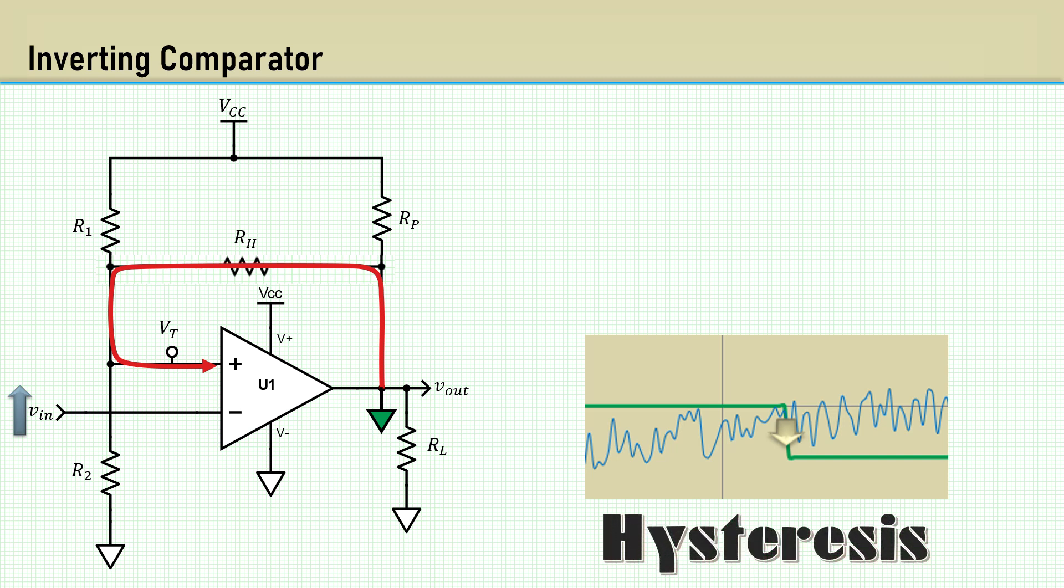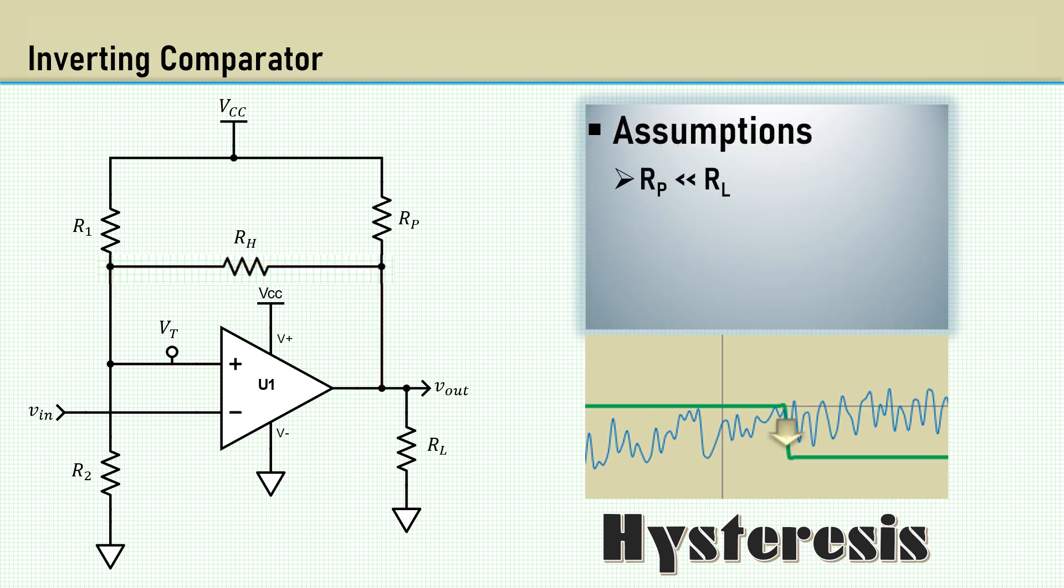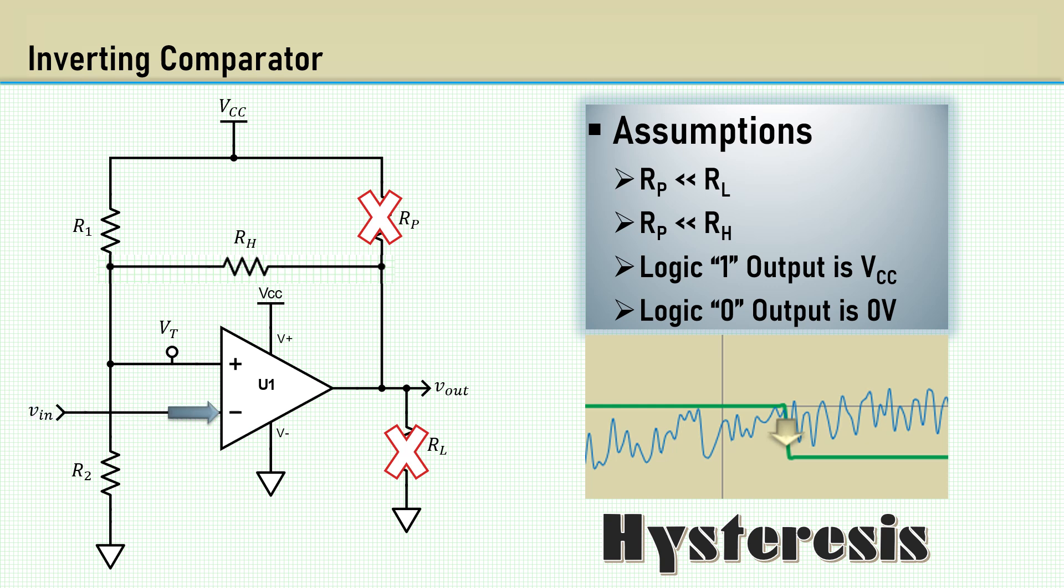In most cases, the circuit analysis for this function will be made with some assumptions. One is that the pull-up resistor is much less than the load resistor. It also assumes the pull-up resistor is much less than the hysteresis resistor. The high output or logic 1 is assumed to be VCC and the logic low or 0 is ground or 0 volts. This takes RP and RL out of the analysis. One advantage of the inverting configuration is that it has a high input impedance with the input signal going directly into the inverting input.